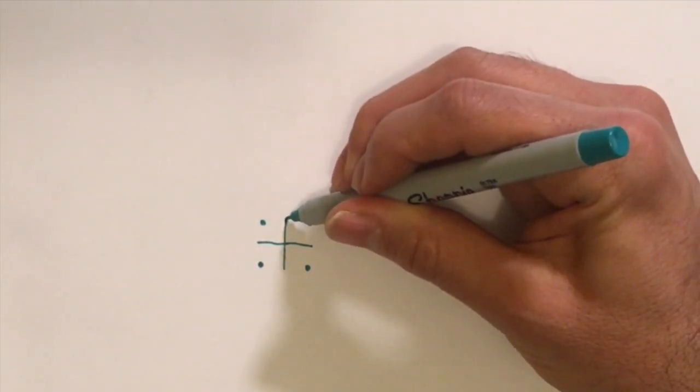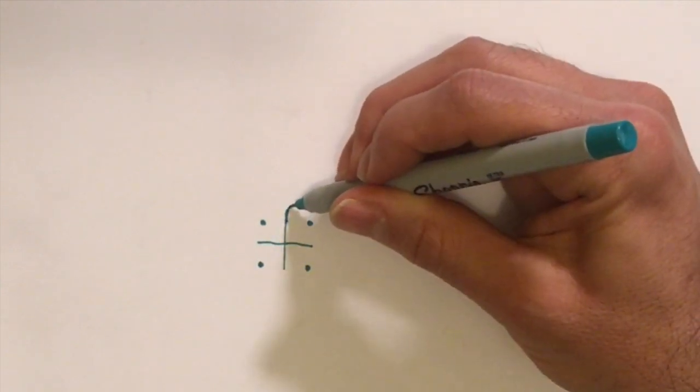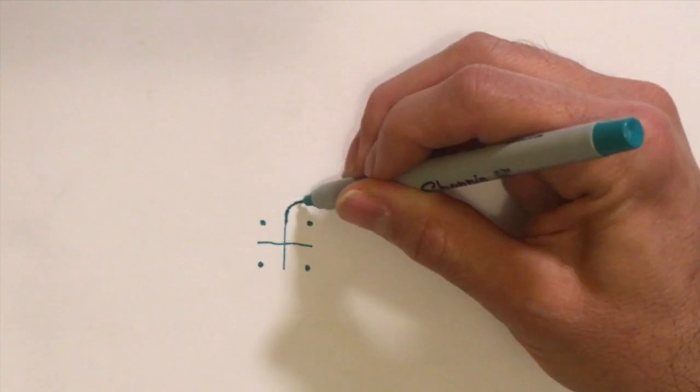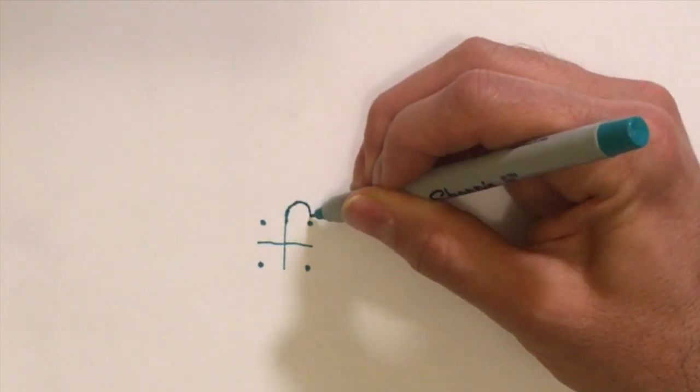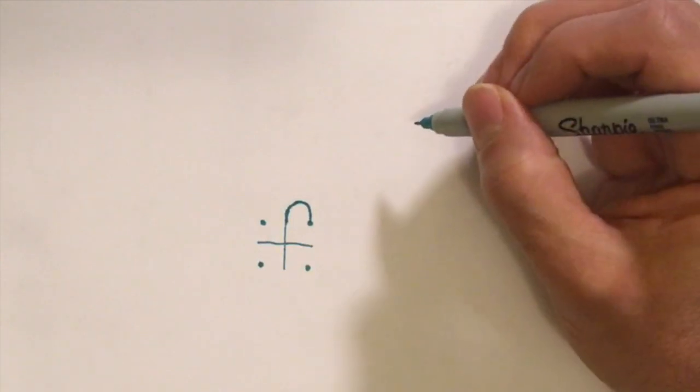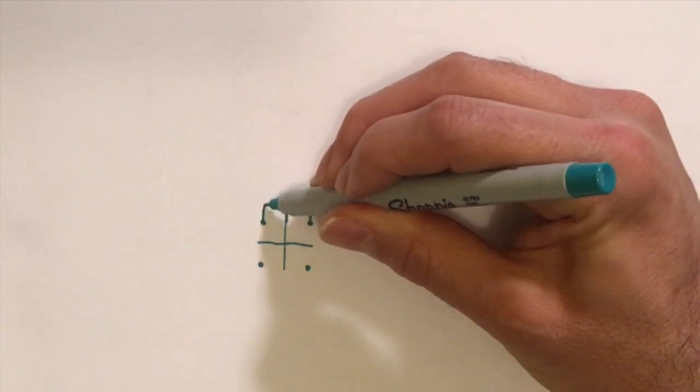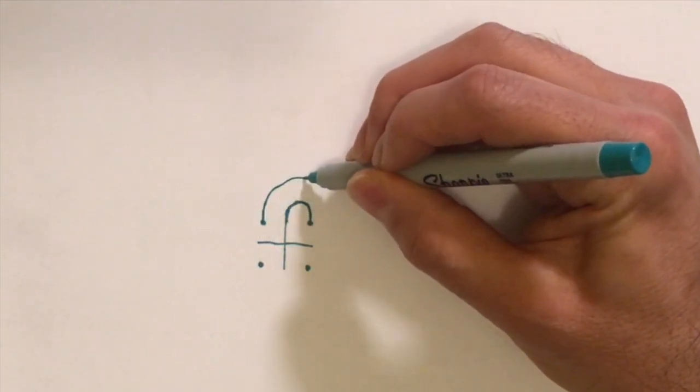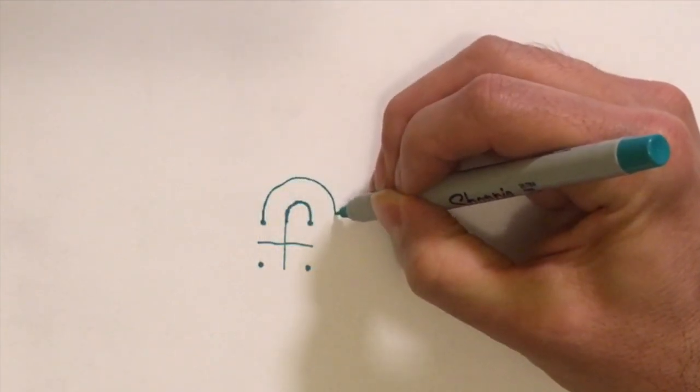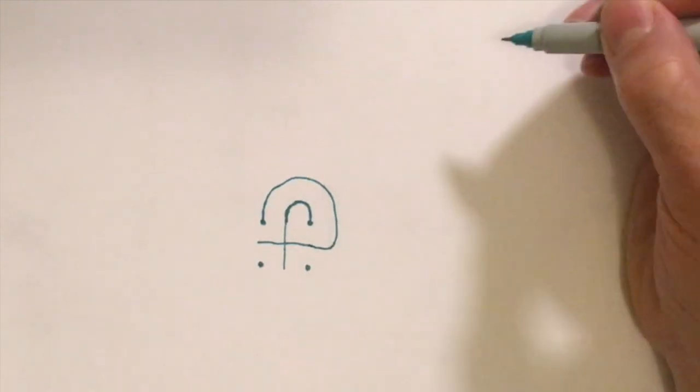Now we're going to start connecting our dots in a pattern. Find the vertical line and continue your line out in a curvy motion and connect it to the dot on the left hand side. Now move to the dot that's on the top right hand side and make another curvy line to the horizontal line of the plus sign.